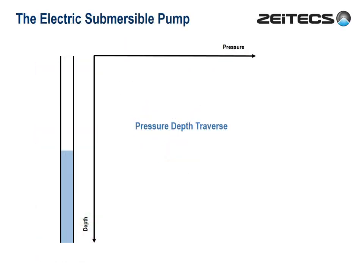Right. Now let's look at this from a totally different perspective. Here we see a plot of pressure versus depth, often referred to as a pressure-depth traverse. Depicted here is a dead well with a deep static fluid level. The reservoir pressure, or shut-in bottom-hole pressure, is insufficient to support a liquid column to surface, let alone produce at an economic rate.